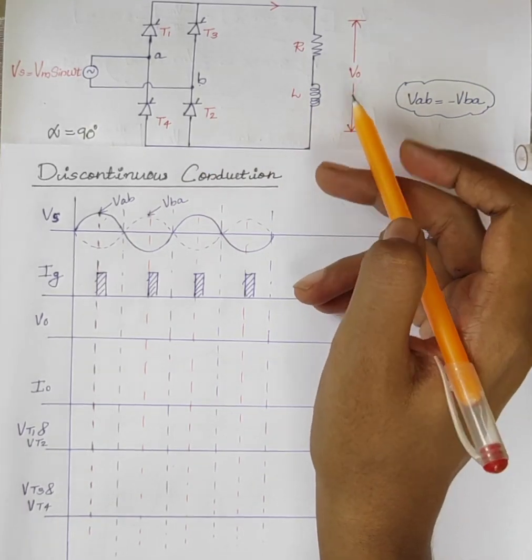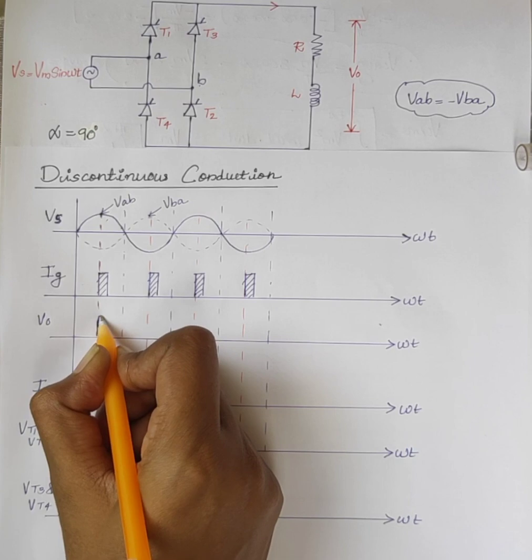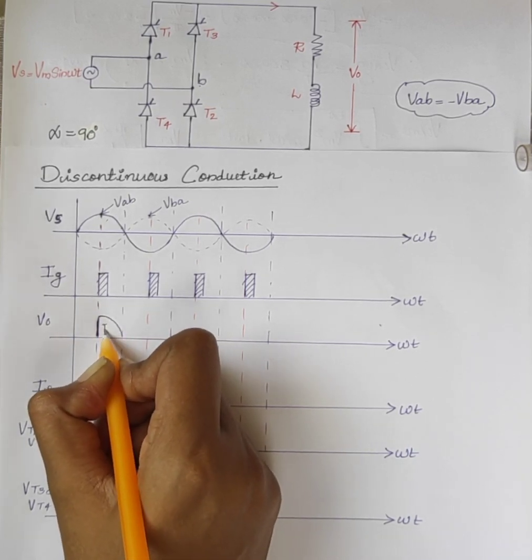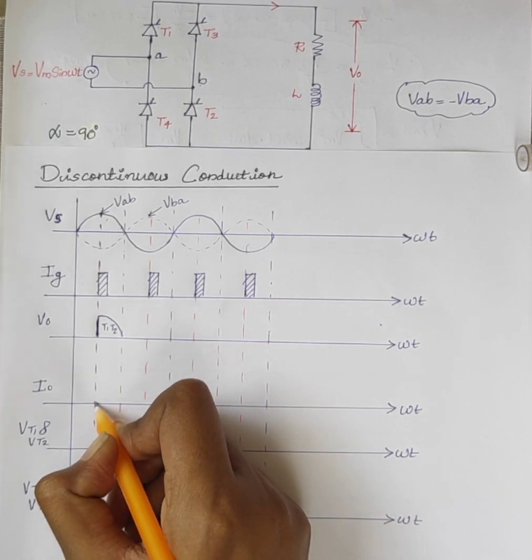During the positive half cycle, thyristors T1 and T2 conduct and the output current increases slowly.